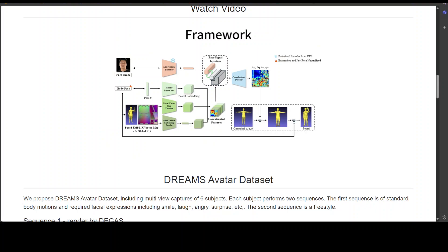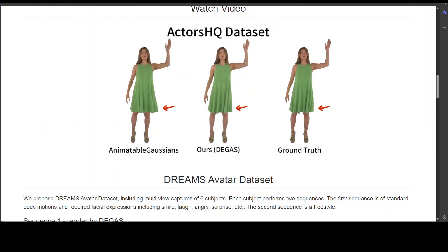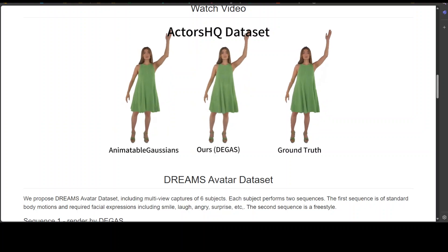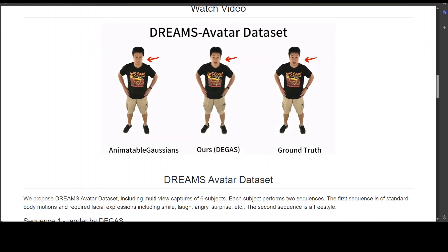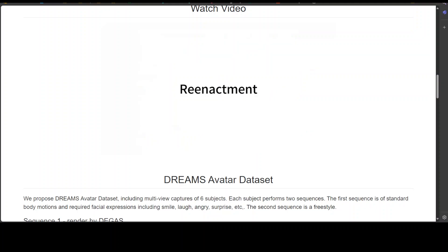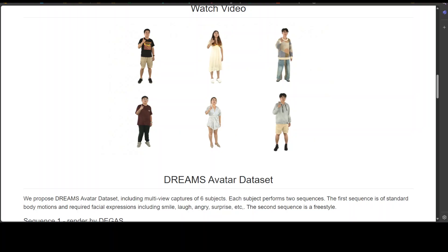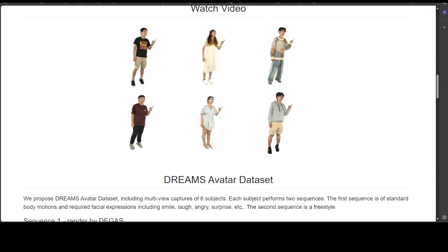As you can see here, the system takes body pose parameters from SMPL-X for body motion control, and uses a pre-trained expression encoder from DPE — disentanglement of pose and expression — for facial expressions. DEGAS outperforms state-of-the-art methods in both qualitative and quantitative evaluations on existing datasets and a newly proposed Dream Avatar dataset, as you can see on your screen.